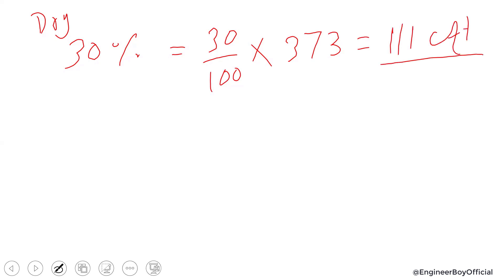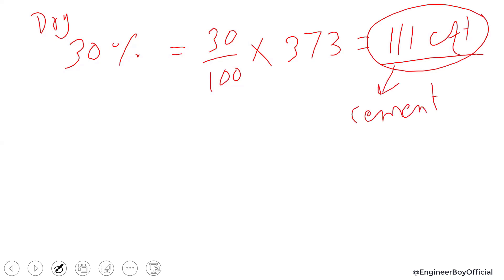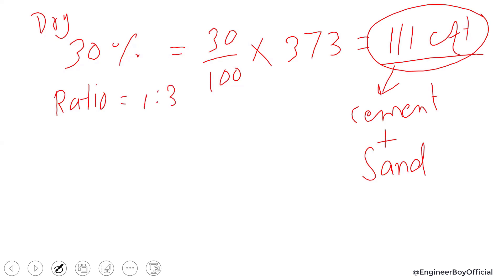Now, this mortar contains two things: cement and sand. We have to determine both using the mix ratio, which is 1:3. The sum of ratio is 1 plus 3, which equals 4.